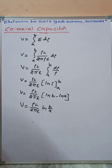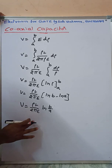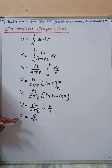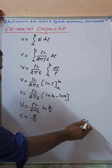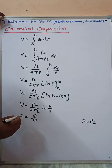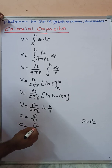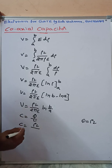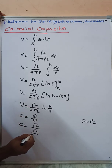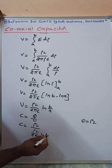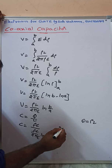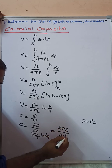Now we want the capacitance equation: C = Q/V. Here Q = rho_L (the total charge). Substituting V into the equation, C = rho_L / [(rho_L / 2*pi*epsilon) * log(b/a)]. The rho_L terms cancel, giving C = 2*pi*epsilon / log(b/a).